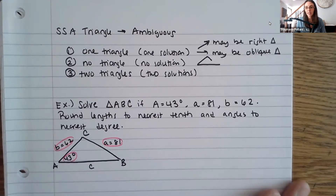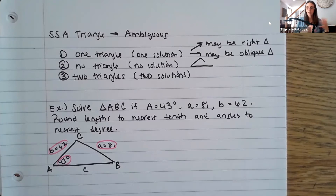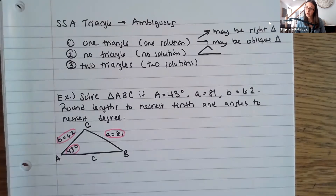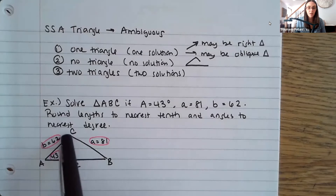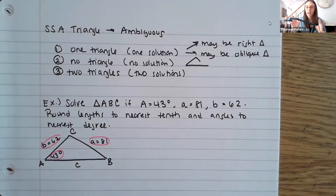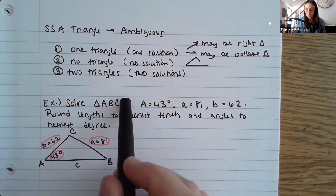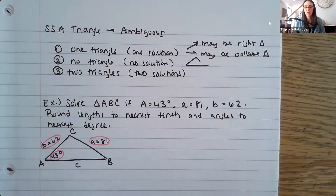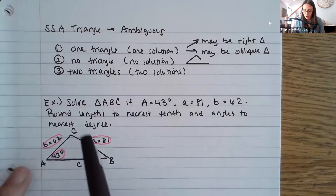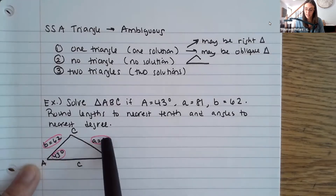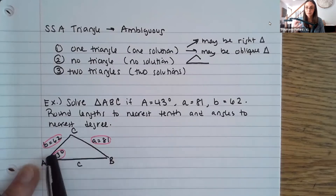We're still going to use the Law of Sines here. The difference is we can't start with the 180-degree sum because we don't have two angles. We'll start with the Law of Sines instead — kind of working backwards. Just because I draw a picture doesn't mean I know there will be a solution; it just helps visualize what's possibly going to happen. I do recommend drawing a picture when setting up a triangle.